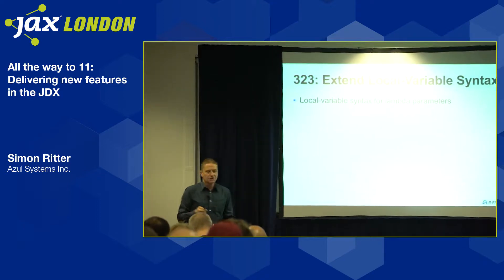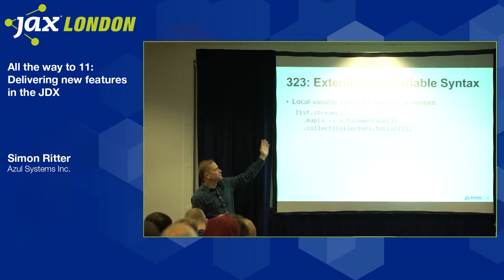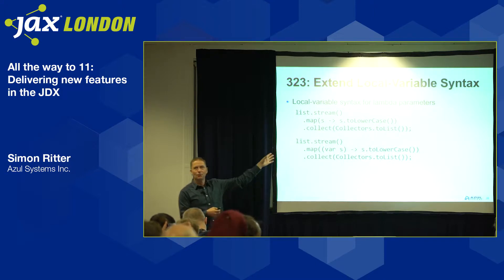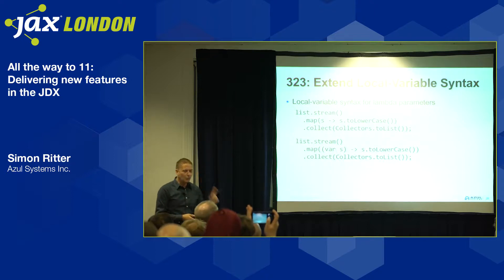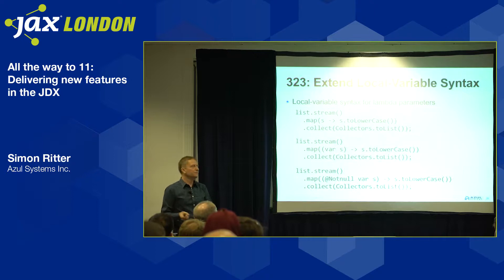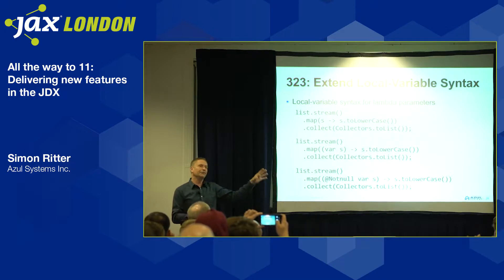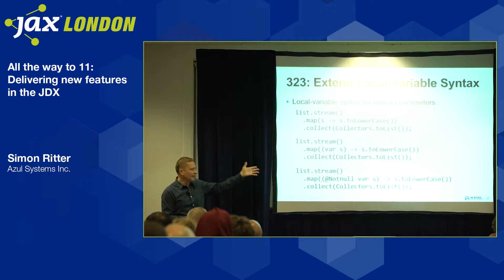Extended local variable syntax for lambda parameters. You can now use 'var' in a lambda expression — for example, (var s) -> s.toLowerCase(). You might ask why, since lambda expressions already have type inference. The one and only reason to use this is to add an annotation to the lambda parameter. You have to have a type involved, and using var means you don't have to state it explicitly while still being able to add an annotation.